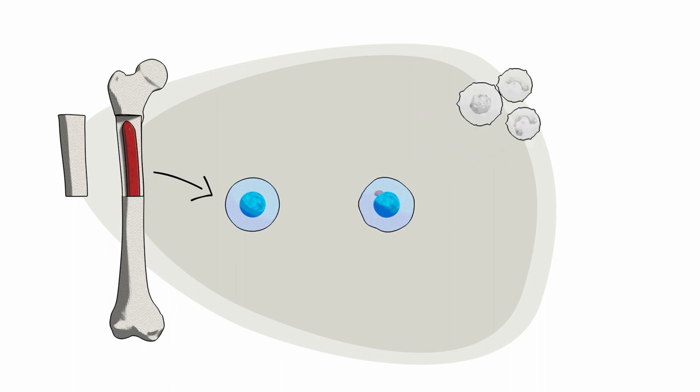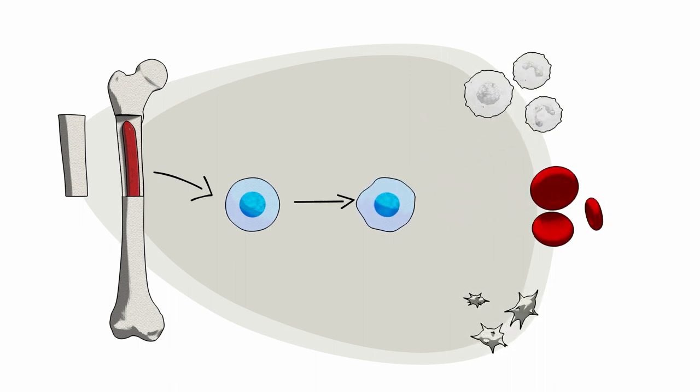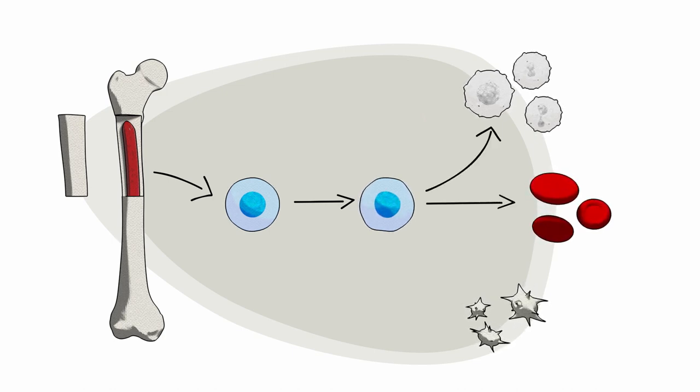Stem cells and three main types of blood cells are created in the bone marrow: white blood cells, red blood cells, and platelets.